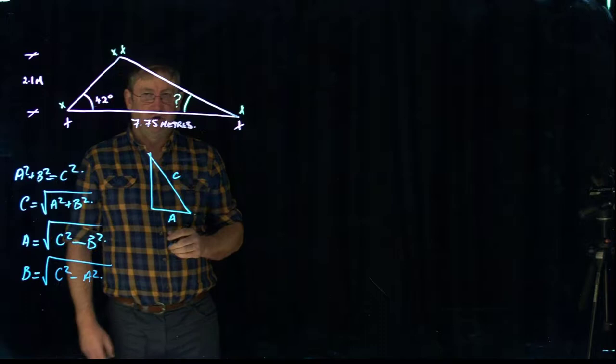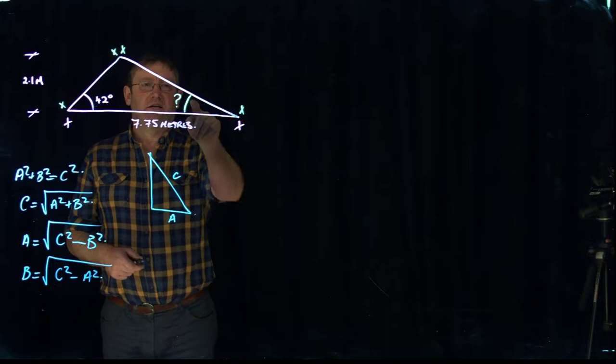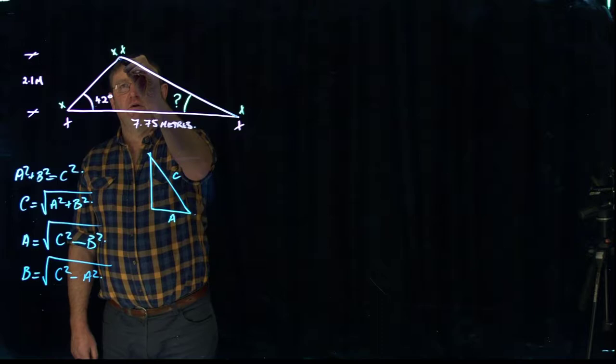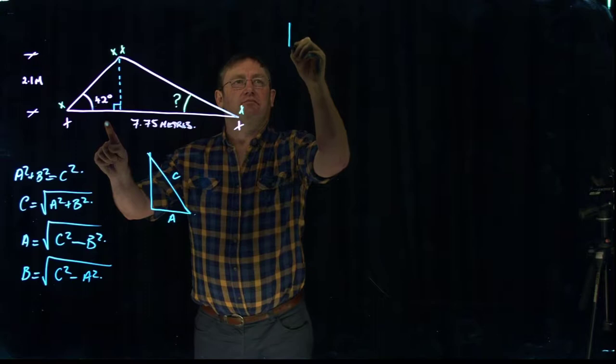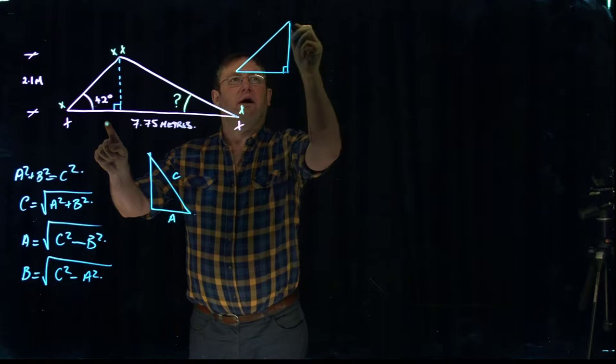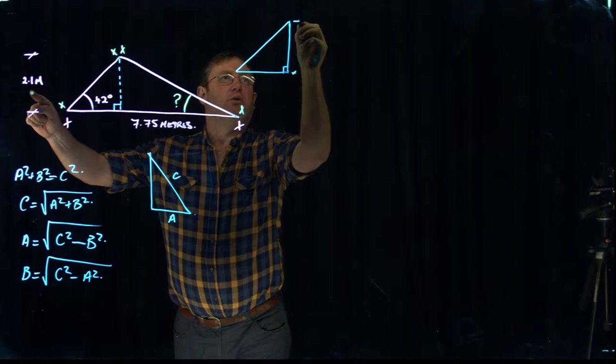So this truss here, we want to work out this angle and these two lengths. So the thing you need to do is break it into a couple of triangles. And these are going to be right angle triangles. So I'm going to redraw that triangle there. Got this triangle. Right angle in the corner. Going up here. It has a height here of 2.1 meters.